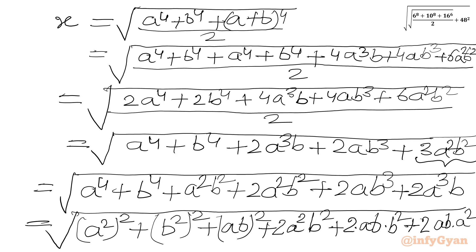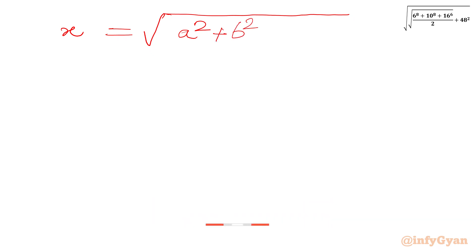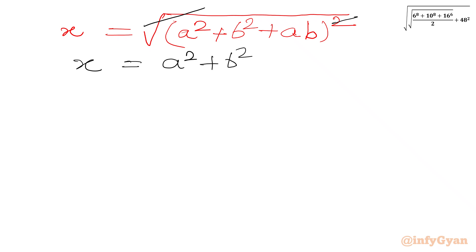Now we rewrite: A power 4 as A squared whole squared, B power 4 as B squared whole squared, A squared B squared as AB whole squared. The remaining terms 2A squared B squared, 2AB cubed, and 2A cubed B match the pattern of the standard algebraic identity A plus B plus C whole squared. Setting P equals A squared, Q equals B squared, R equals AB, this radicand equals A squared plus B squared plus AB whole squared. So X equals square root of A squared plus B squared plus AB whole squared, and cancelling square root and square gives X equals A squared plus B squared plus AB.